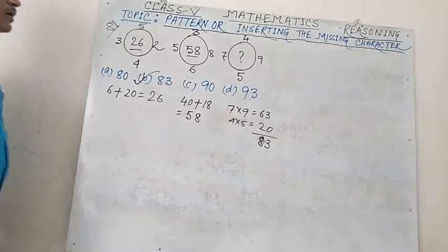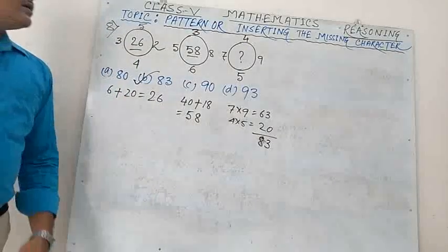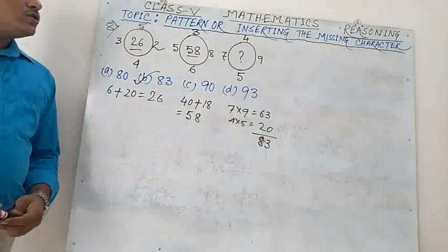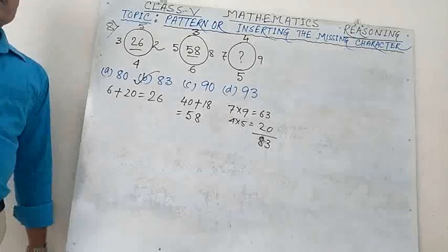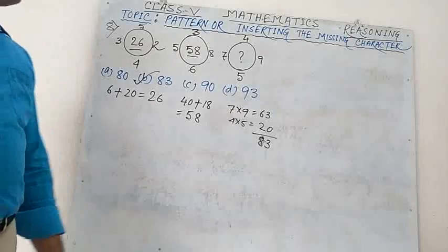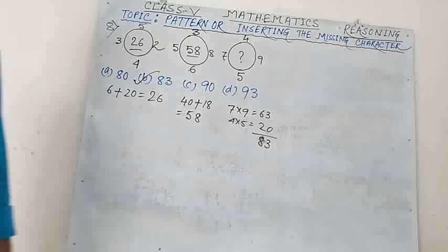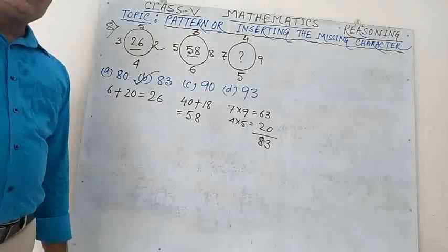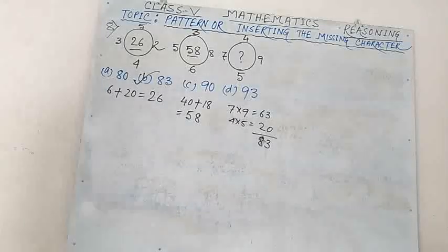Option B is the correct option. So in this way we can solve the pattern or inserting the missing character type problem.